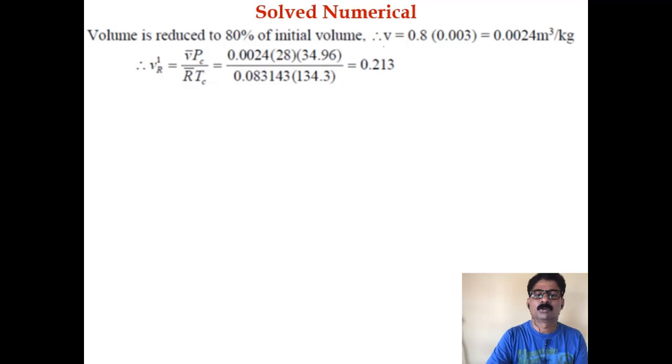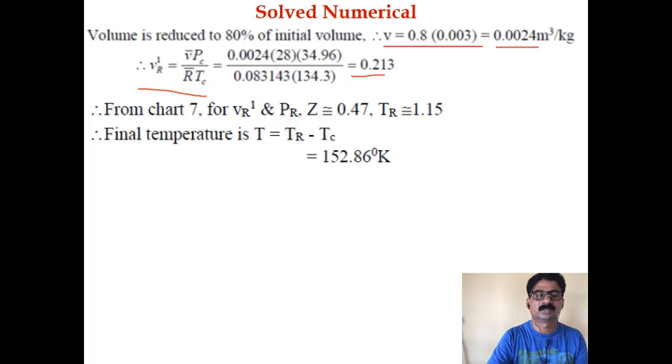If the volume is reduced to 80% of initial volume, then V becomes 0.8 times 0.003, which is 0.0024 cubic meters per kg. Vr dash changes to 0.213. Using Vr dash and Pr from the chart, you can find out Z as 0.47 and Tr as 1.15. Now you can find out T as Tr times Tc, which gives 152.86 Kelvin.